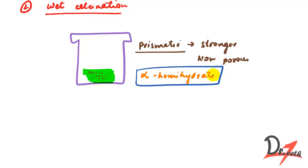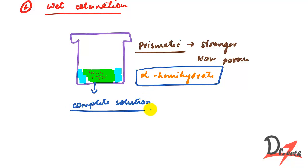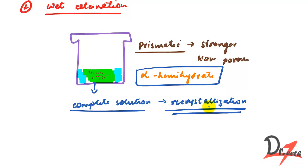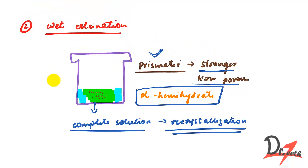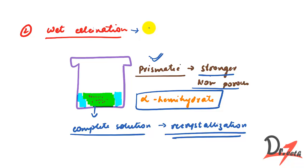Why is alpha hemihydrate stronger than beta hemihydrate? In wet calcination, sufficient water is present, which allows complete solution conversion and recrystallization. The new crystals formed are prismatic, stronger, and non-porous — that is why alpha hemihydrate is stronger. By wet calcination we produce type three dental stone, which is why dental stone is stronger than dental plaster.